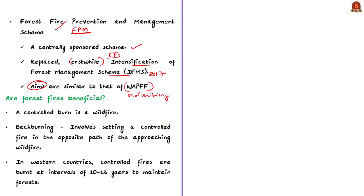In addition to government schemes, traditional methods of fire prevention are also effective if effectively coordinated with local communities. Furthermore, as a long-term strategy, public awareness and community awareness shall be given highest priority in order to mitigate or prevent forest fires.